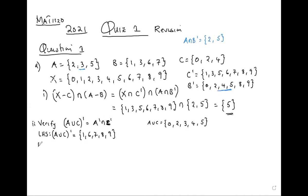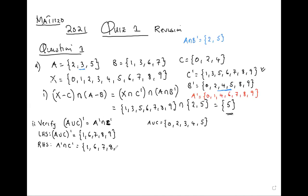Leave the left-hand side there and separately find the right-hand side: A complement intersection C complement. We need A complement. A complement is {0, 1, 4, 6, 7, 8, 9}. C complement we already found as {1, 3, 5, 6, 7, 8, 9}. Now A complement intersection C complement gives us {1, 6, 7, 8, 9}.